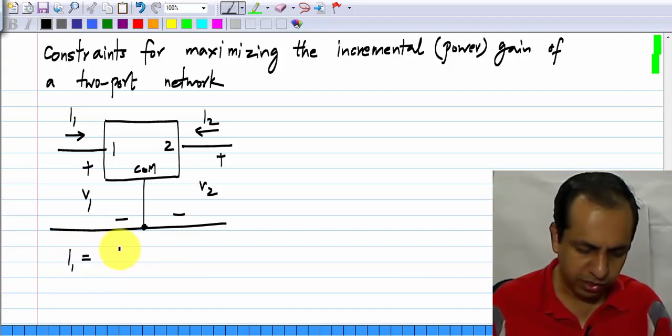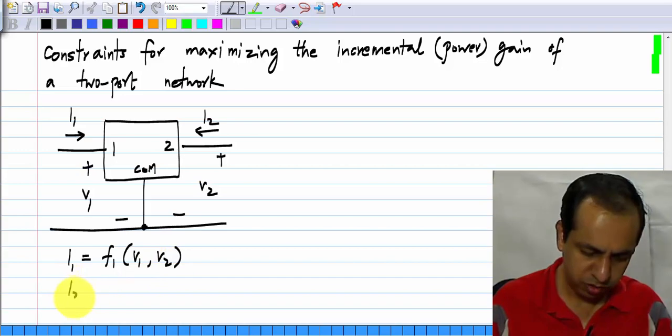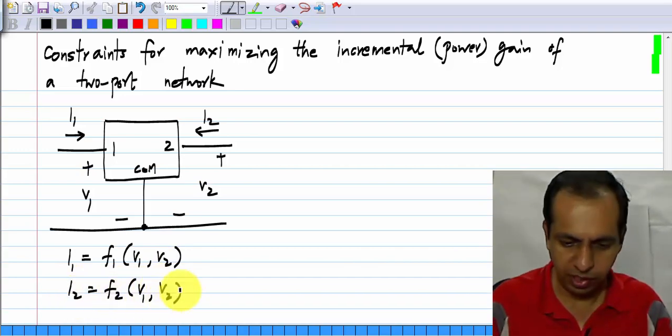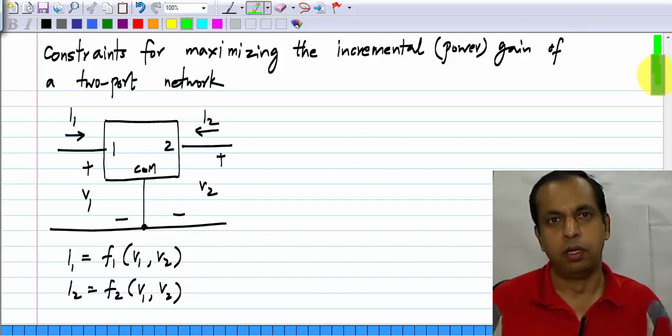The non-linearity is given by currents as functions of voltages. Like I said earlier, other representations are possible.